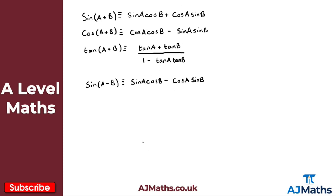Moving on to cosine of A minus B, we can express this as cosine A cosine B, and now we add sine A times sine B. Again, notice it's pretty much identical to cosine of A plus B, but rather than a minus we now have a plus.